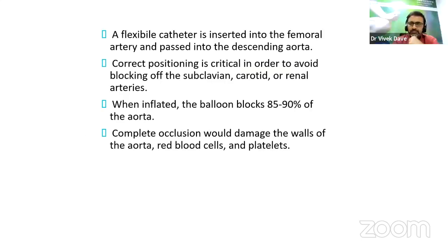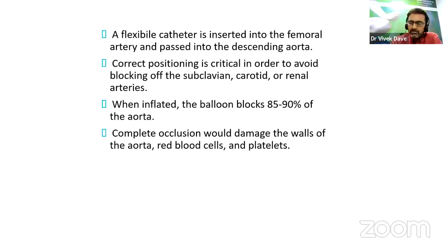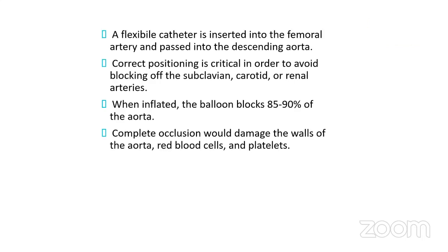IABP is a flexible catheter inserted into the femoral artery and passed into the descending aorta. Correct positioning is critical to avoid blocking the subclavian, carotid, or renal arteries. When inflated, the balloon blocks 85–90% of the aorta — complete occlusion would damage the walls of the aorta, RBCs, and platelets. The position of the IABP tip must be confirmed by placing it in the cath lab under fluoroscopy, or by a chest X-ray after insertion.